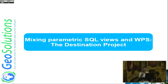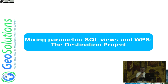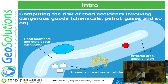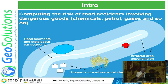One last example of what you can do with all these tools together: using SQL views, parametric SQL views, and WPS all together to accomplish something quite complex. This is a project — basically my first work for GeoSolutions — that took a couple of years. The main feature was to compute the risk of road accidents involving dangerous goods: chemicals, petrol, gases. We had many objects to take care of, like the roads themselves and everything around the road that could be involved in case of an accident, to calculate the potential damage.